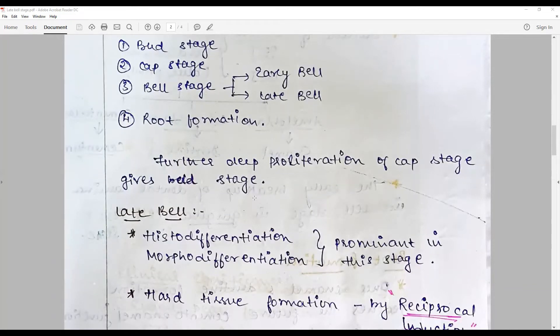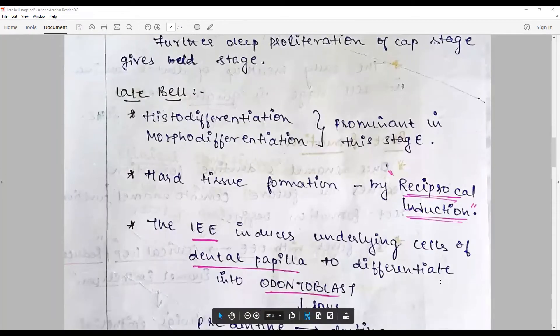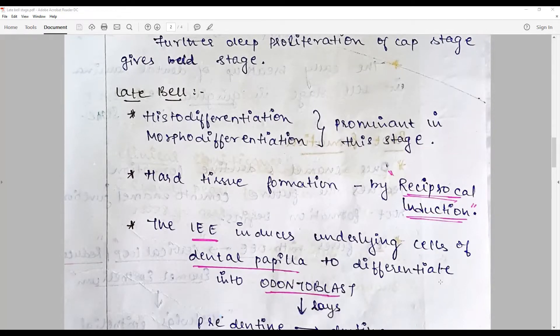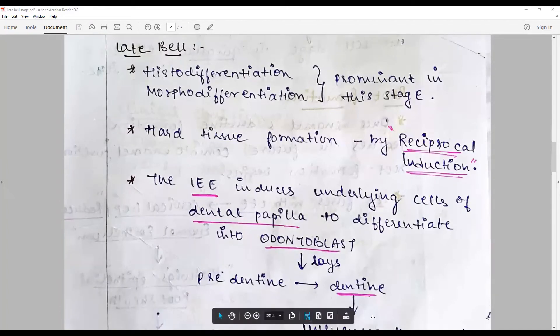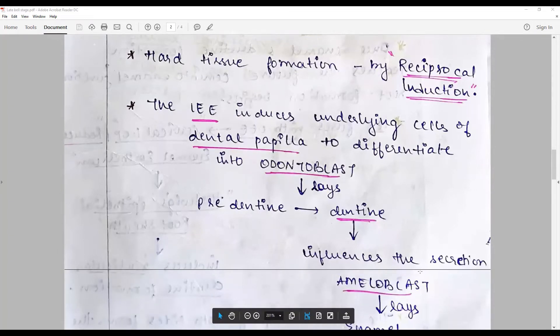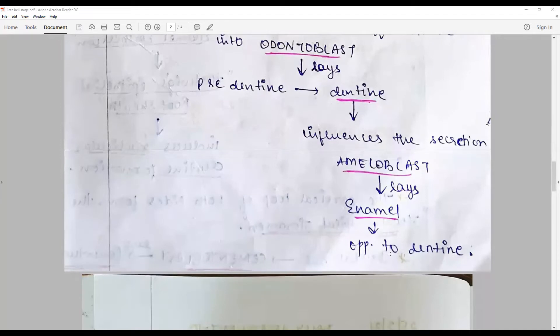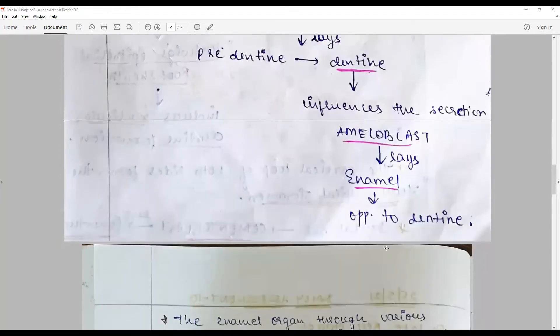The hard tissue formation is initiated by a phenomenon called as reciprocal induction. What is this reciprocal induction? The inner enamel epithelium of your cap stage as it progresses induces the underlying cells of the dental papilla to differentiate into odontoblast, which lays down the predentin that matures into dentine. Once the first layer of dentine is formed, this influences the secretion or the turning of the inner enamel epithelium into ameloblast, so that ameloblast lays down the enamel matrix in opposition to dentine.